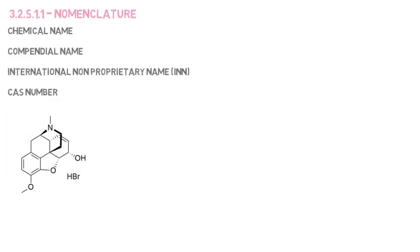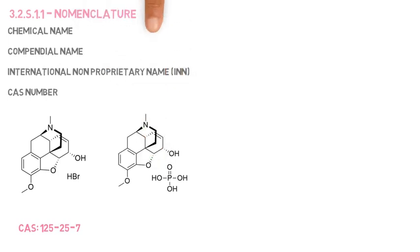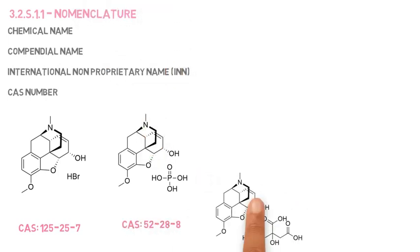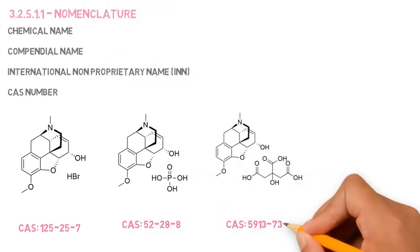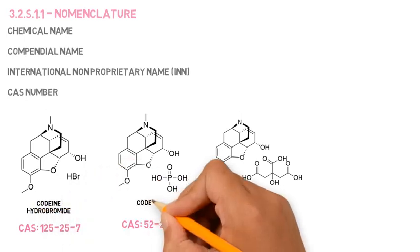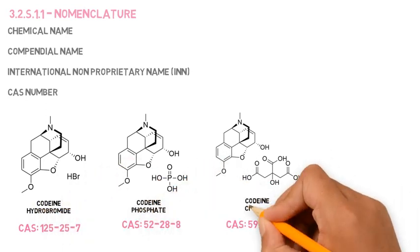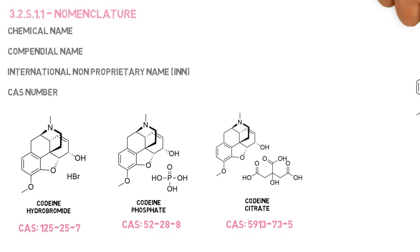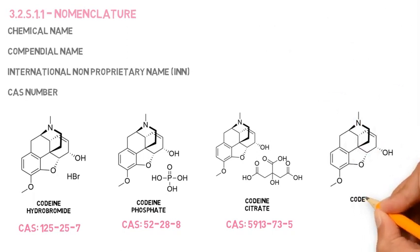It's important to pay attention to APIs in salt form because the CAS number can be different from one salt to the other, as shown in this example for the different codeine salts. It will also be different for the salt form when compared to the freebase API. So the CAS number helps us identify exactly the form of the API that the DMF is about.